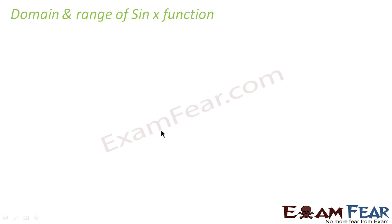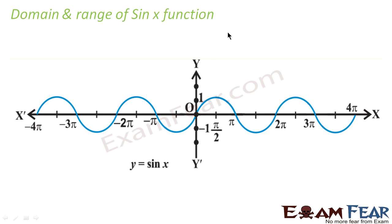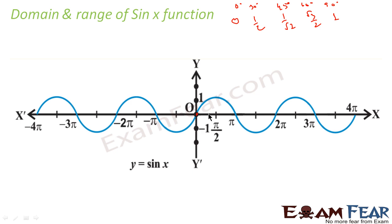Let's see the domain and range of the sine function. This is the typical graph of the sine function. The values were 0, 1/2, 1/√2, √3/2, and 1, corresponding to 0°, 30°, 45°, 60°, and 90°. So sin(0)=0, sin(30)=1/2, sin(45)=1/√2, sin(60)=√3/2, and sin(90)=1. This is how we plot the graph, and if you plot more values of sine, you get a graph exactly like this.